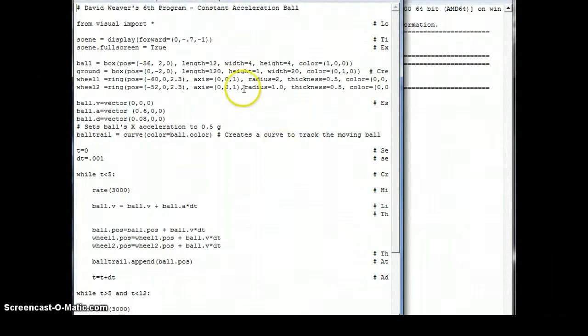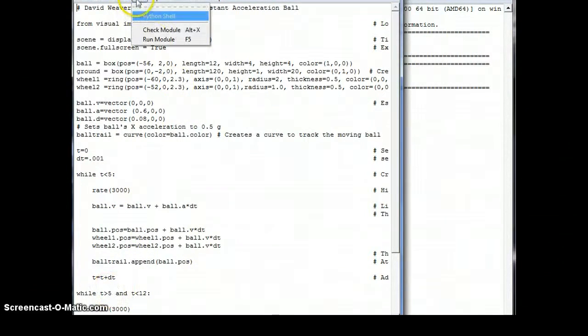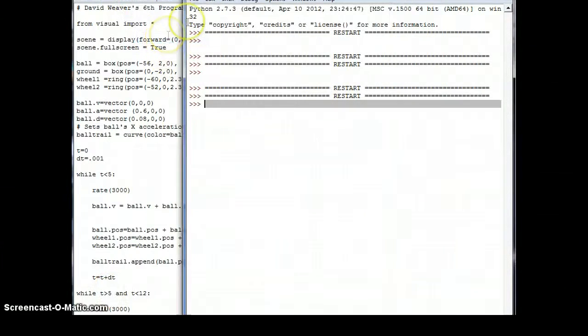Now to show the data in motion of my car, I use VPython. As you can see from zero to five, you can see that the car accelerates, and then from five to twelve you can see that it decelerates. Now I'm going to run the module to actually show it.